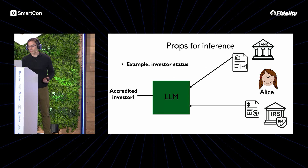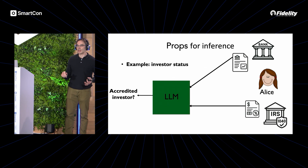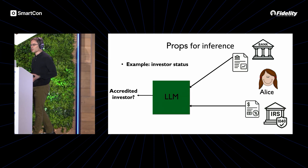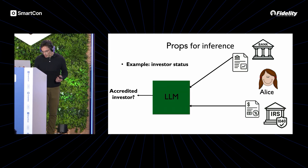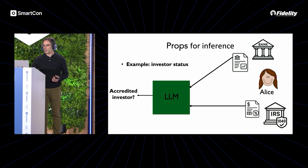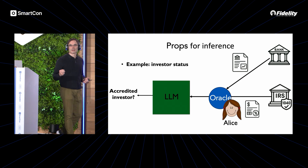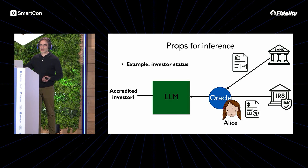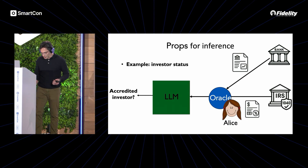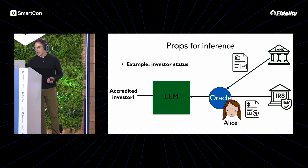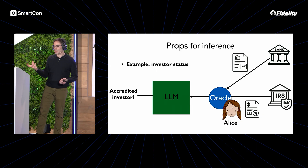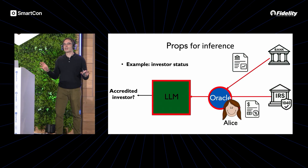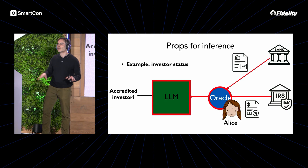Props can also be used for inference. For example, suppose somebody is selling a token that can only be sold to accredited investors — investors who have the financial resources to incur the risk the offering involves. Props can ingest financial records from trustworthy sources like financial institutions or the IRS. Alice can provide a transcript of her tax filings, and an LLM can process these documents and determine whether Alice is indeed an accredited investor. All of this can happen within a security perimeter defined by the props.